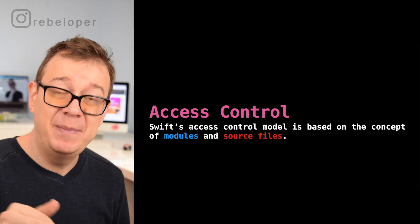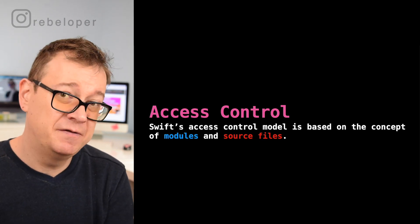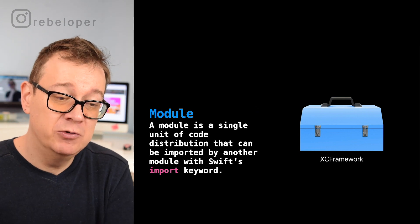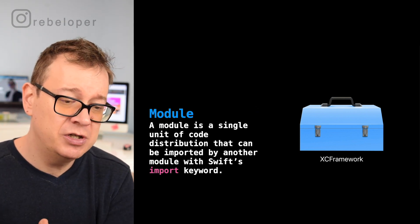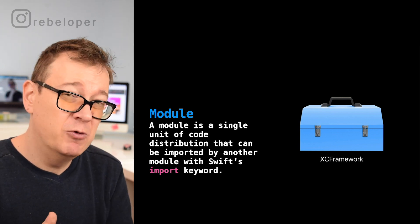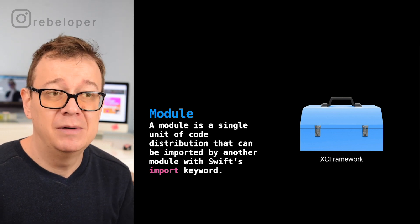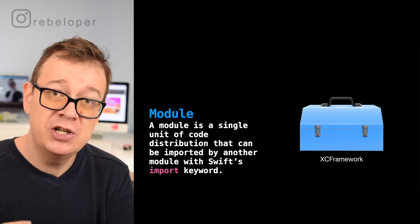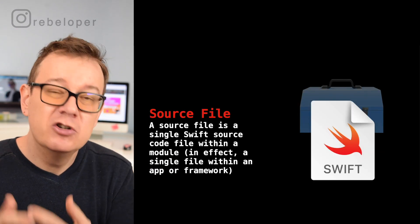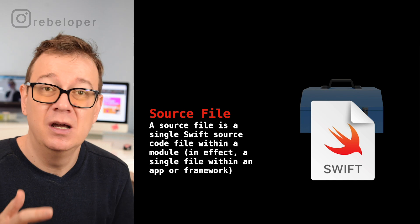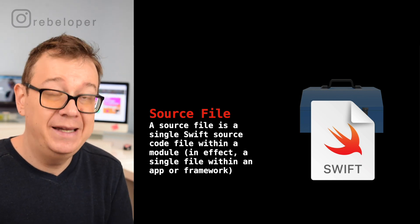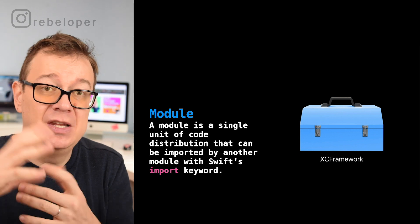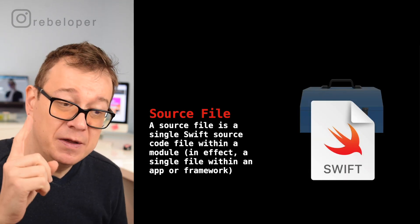Swift's access control model is based on the concept of modules and source files — two really important concepts to grasp. A module is a single unit of code distribution that can be imported by another module with Swift's import keyword — think of a framework like SwiftUI, Foundation, or UIKit. Your app project is also a module. A source file is a single Swift source code file within a module, in effect a single file within an app or framework.